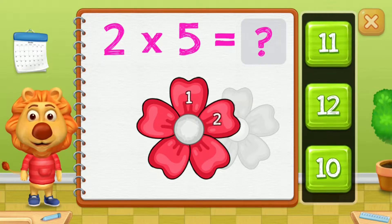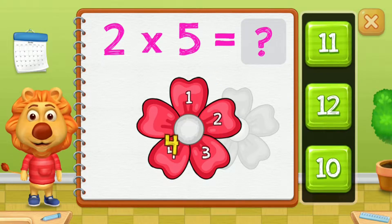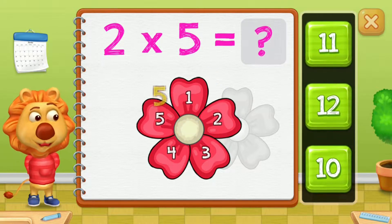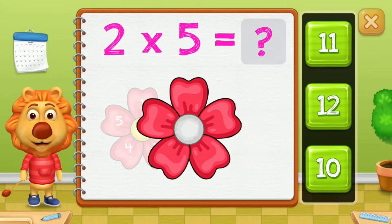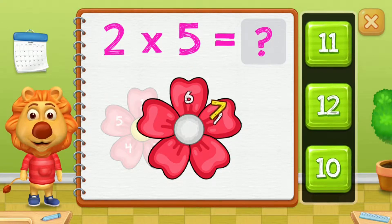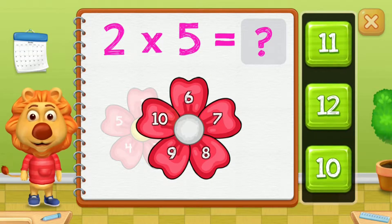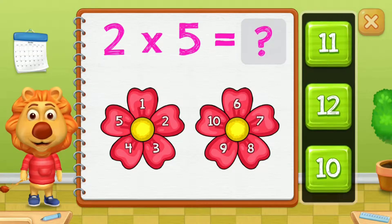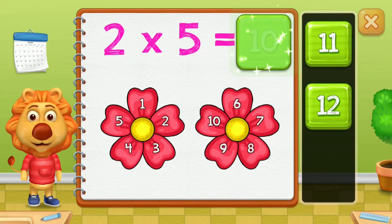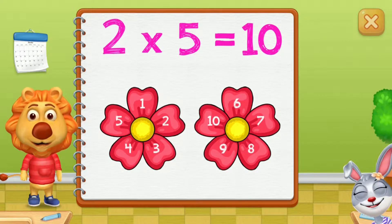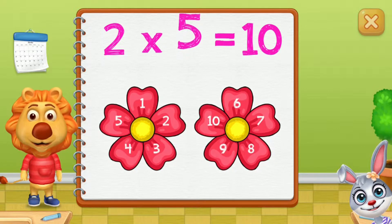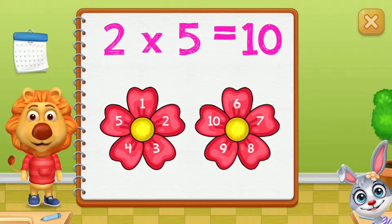1, 2, 3, 4, 5, 6, 7, 8, 9, 10. Two groups of 5 equals 10.